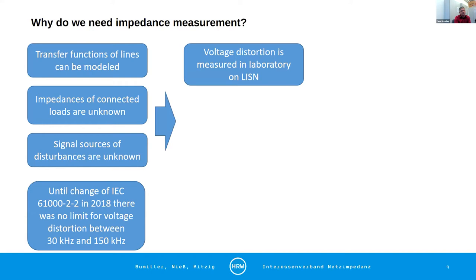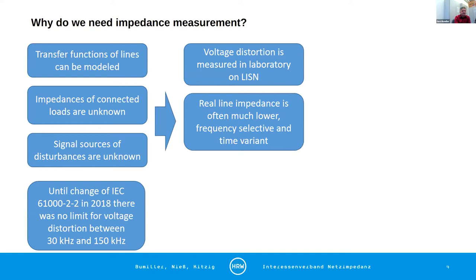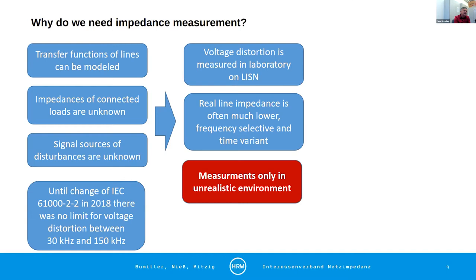If we have these voltage distortions, it will be only measured in laboratory based on the line impedance simulation network, which is very old and does not fit with reality anymore. Real impedances are often much lower, frequency selective, and time variant. And the impedances are really changing over time, getting more and more frequency selective and more time variant.